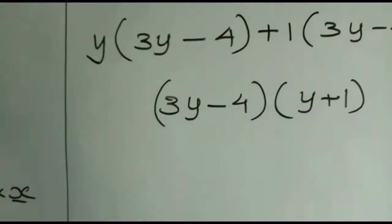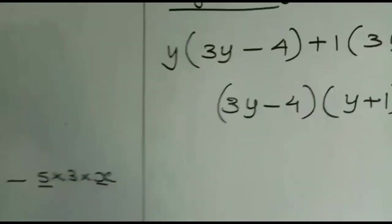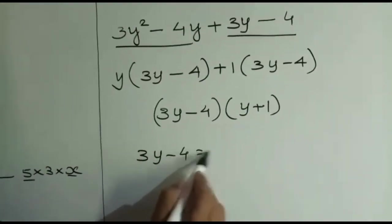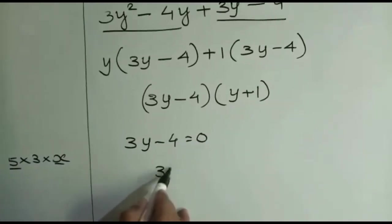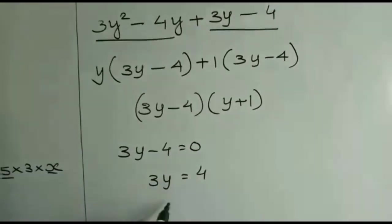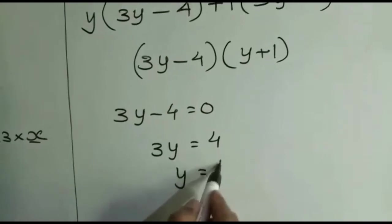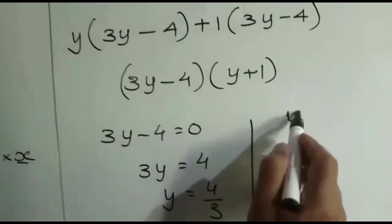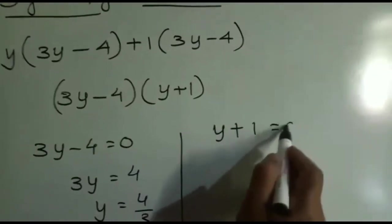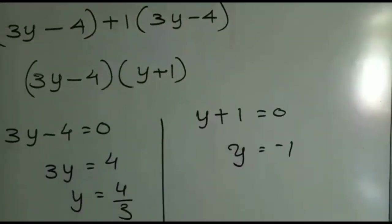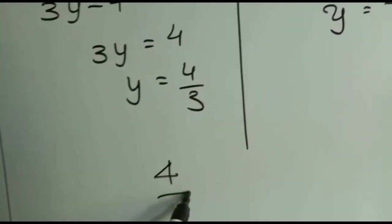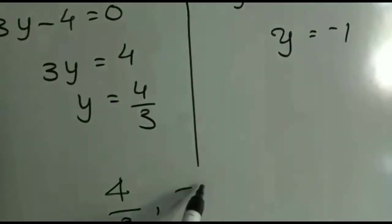Once it is factored into two linear polynomials, equate each linear polynomial to zero. 3y - 4 = 0, so 3y = 4, y = 4/3. Taking the second linear factor, y + 1 = 0, y = -1. So the zeros of this polynomial are 4/3 and -1.